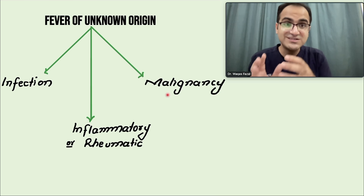Then order relevant baseline investigations. Perform CBC with differential counts and acute phase reactants including ESR. An ESR greater than 100 mm per hour is more likely associated with malignancy or infection including tuberculosis — a highly elevated ESR is a significant finding.